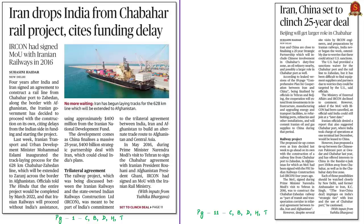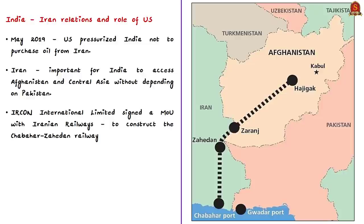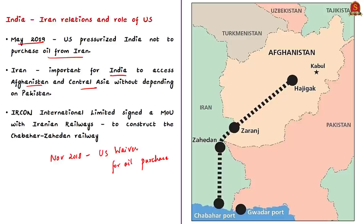This news article is about India losing Iran to China. India and Iran had very good relations until May 2019, when the US pressurized India by threatening sanctions if India purchased oil from Iran. In November 2018, India received a six-month waiver from the US government to purchase oil from Iran, but this waiver was not renewed in May 2019. As a result, India could not purchase oil from Iran to avoid US sanctions. Iran is important for India to access Afghanistan and Central Asia without depending on Pakistan, as access to Afghanistan along the Indian border is blocked by Pakistan's illegal occupation.